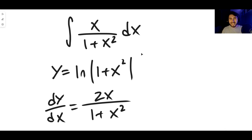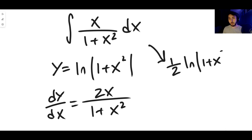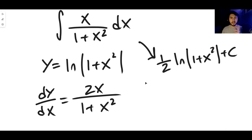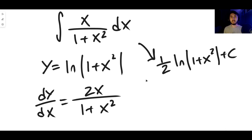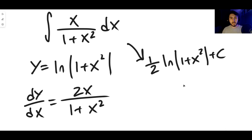When you differentiate the natural log of anything, you always get the derivative on top and the original thing inside the brackets on the bottom. So the derivative of ln(1 plus x squared) is 2x over 1 plus x squared. But we wanted x over 1 plus x squared, not 2x - so we get twice what we want. Our answer is therefore one half of the natural log of 1 plus x squared plus c. When you differentiate the natural log of any function f(x), you always get f'(x) divided by f(x), so any integral in that form can be handled this way.